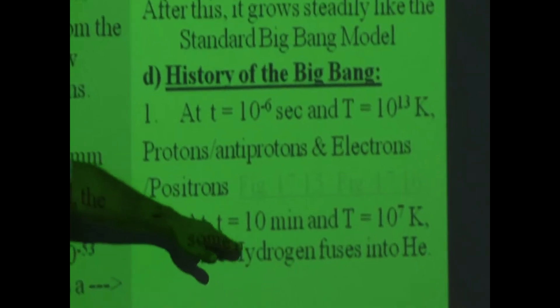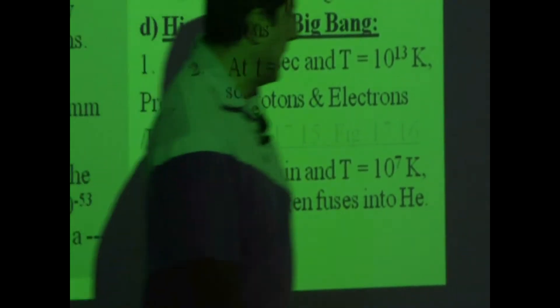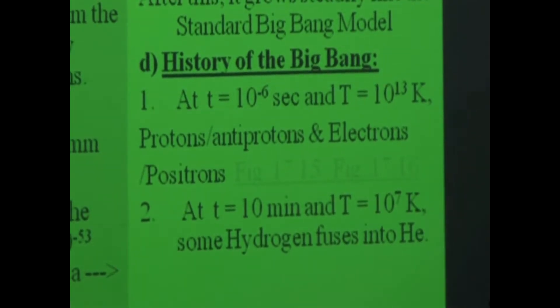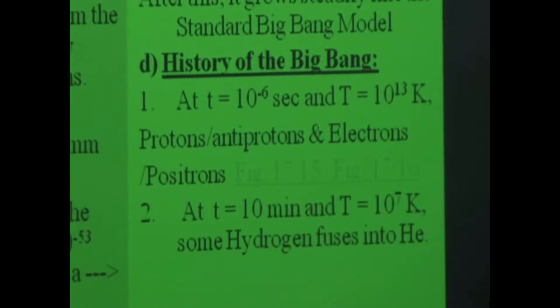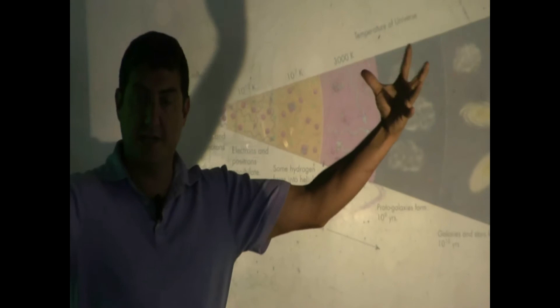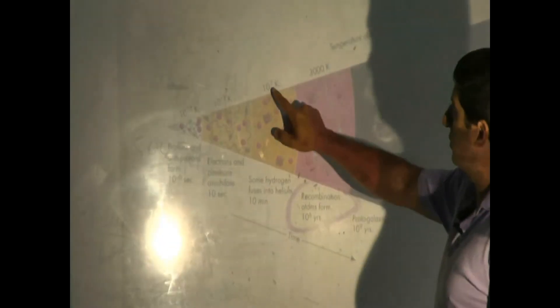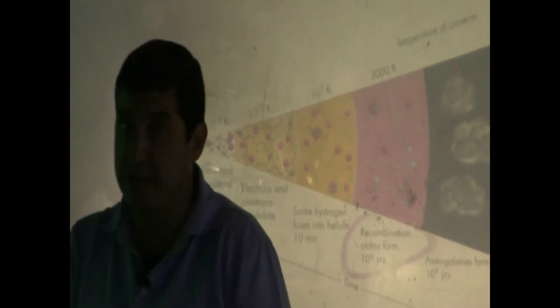At about 10 minutes after the Big Bang — and that's not long, but a lot has happened — the universe has cooled dramatically down to 10 to the 7th Kelvin, that is 10 million Kelvin. It's still hot, but much cooler than when it began.